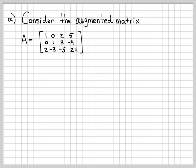Let's take a look at this augmented matrix. Remember, this augmented matrix represents three equations with three unknowns, and the final column represents the equals sign part of the equation. So this first row represents 1x1 plus 0x2 plus 2x3 equals 5 — that's what an augmented matrix means.